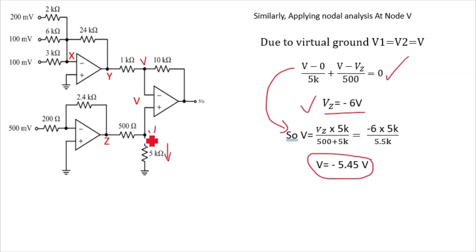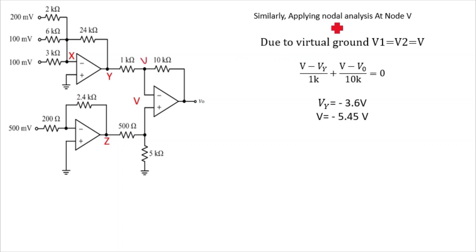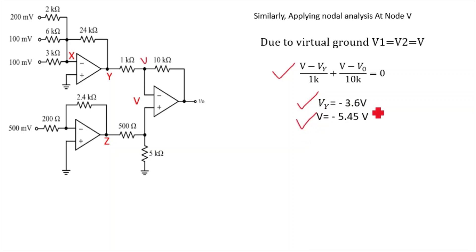We now have VY = −3.6V and V = −5.45V. We apply nodal analysis at the V terminal of the final stage: (V − VY)/1k + (V − V_naught)/10k = 0. We know VY = −3.6V and V = −5.45V, so we substitute these two values into the expression to find V_naught.